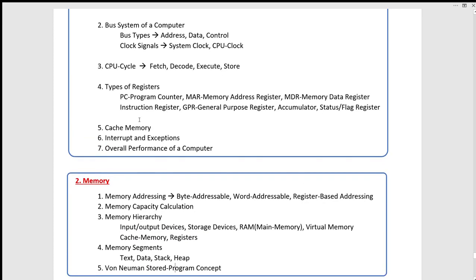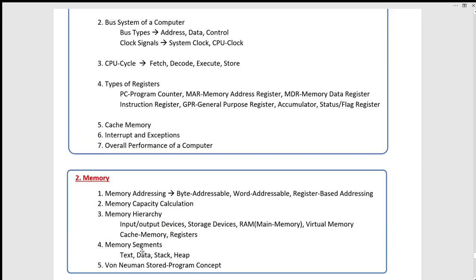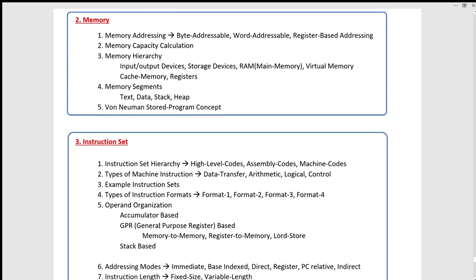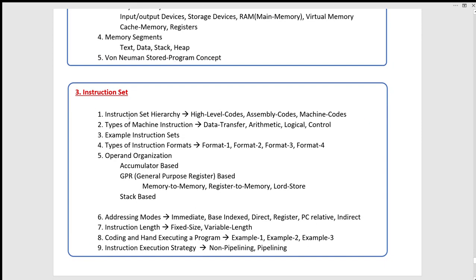Then we will talk about the process, the memory, and instruction execution. If you talk about the instruction set, we will talk about the instruction set and high-level codes. The compiler converts the high-level codes to assembly codes. Then the assembly codes convert to machine codes. That will be processed by the processor.